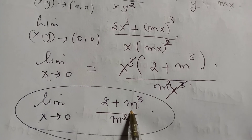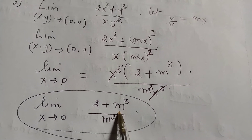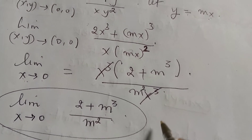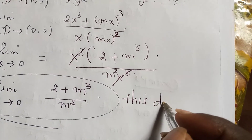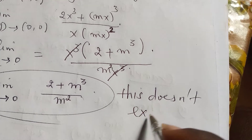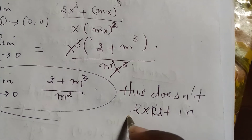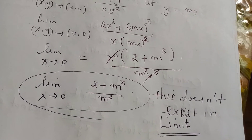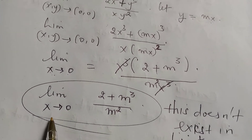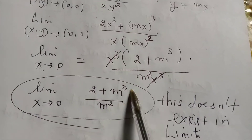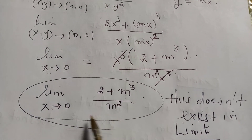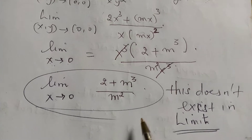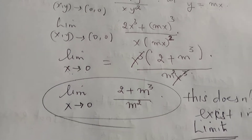After cancellation, the remaining expression is (1 + m³)/m², which contains only the constant m and no x. This means the limit depends on m, the slope of the path. Since different values of m give different results, the limit does not exist. This concludes Part A.